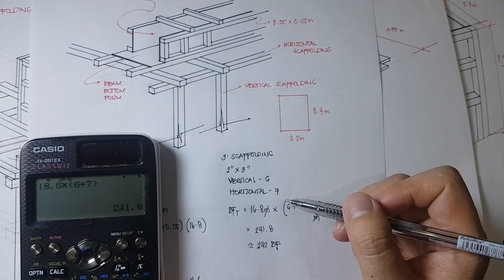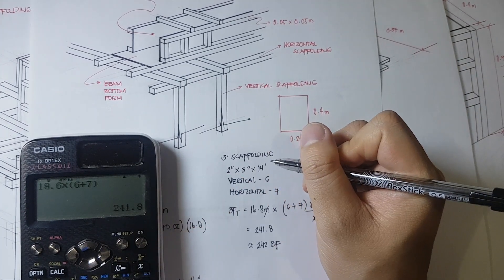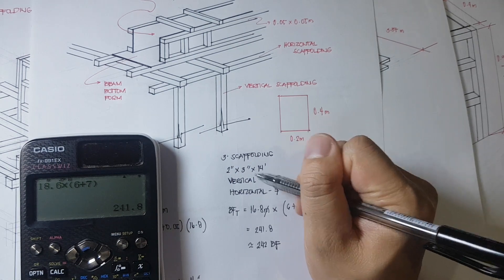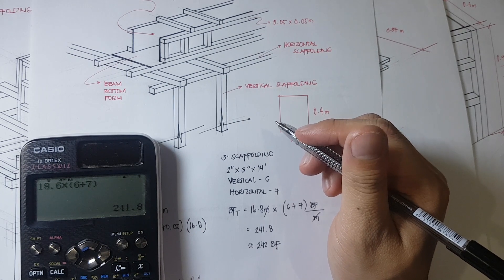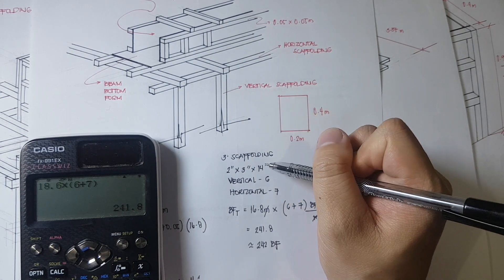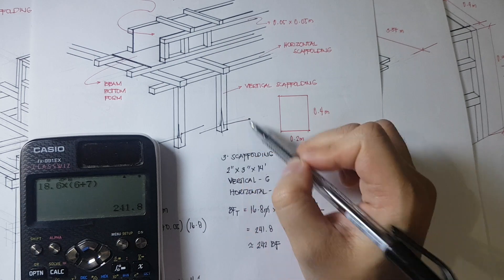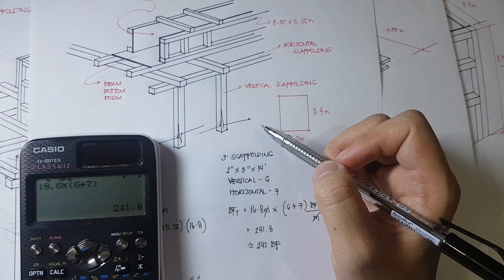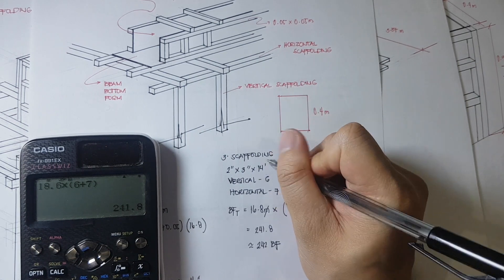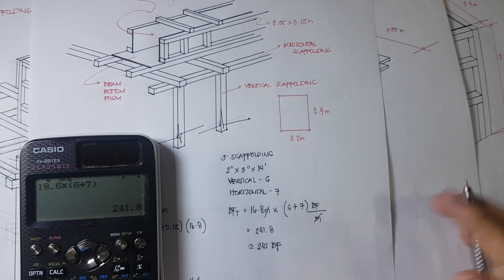For the scaffolding we will be using 2 inch by 3 inch by 14 feet lumber. It is important to use longer commercial sizes to avoid cutting of the vertical scaffolding, and that is also for stability purposes. As much as possible, we try to have the longer length for the vertical scaffolding.